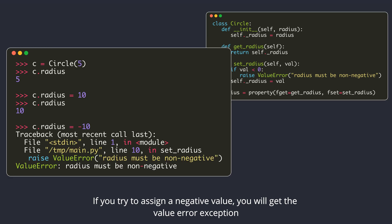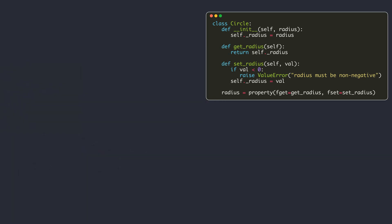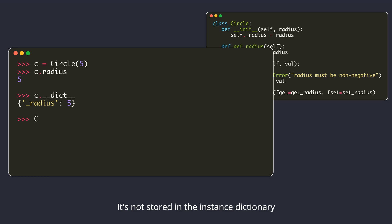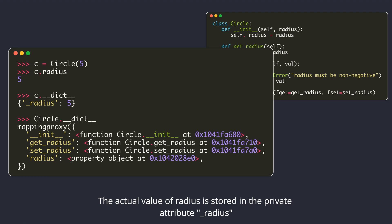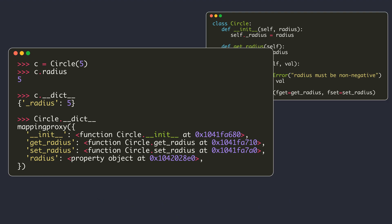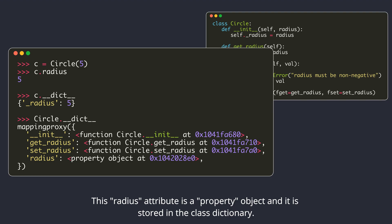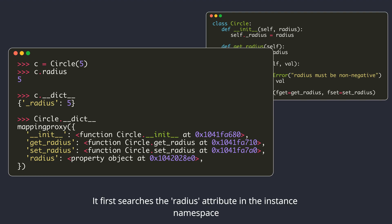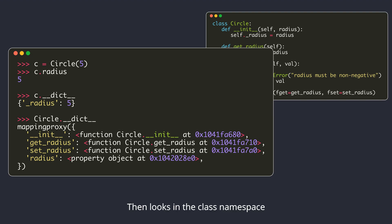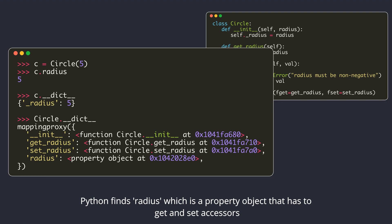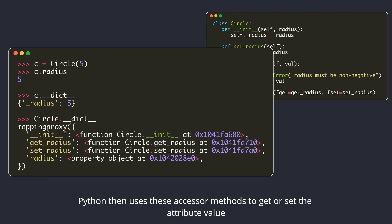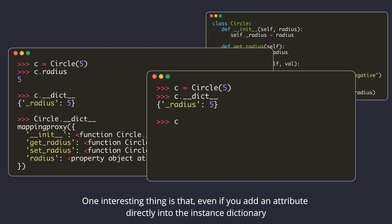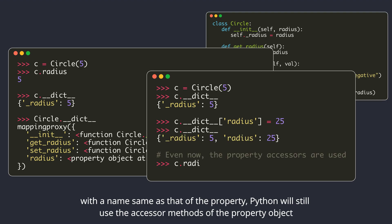If you try to assign a negative value, you will get the ValueError exception. Note that from an end user's perspective, they are accessing the attribute using the name radius without any underscores. It's not stored in the instance dictionary. The actual value of radius is stored in the private attribute underscore radius, and this private attribute is stored in the instance dictionary. This radius attribute is a property object, and it is stored in the class dictionary. When you try to access the radius attribute through an instance of this circle class, Python first searches the radius attribute in the instance namespace, then looks in the class namespace, finds radius which is a property object that has get and set accessors, and uses these accessor methods to get or set the attribute value. Even if you add an attribute directly into the instance dictionary with the same name as the property, Python will still use the accessor methods of the property object.